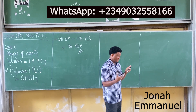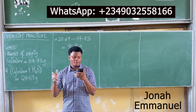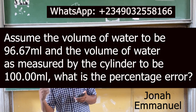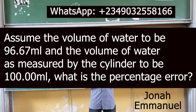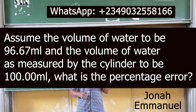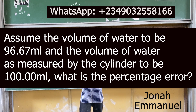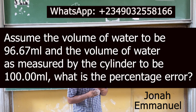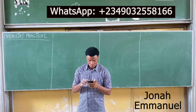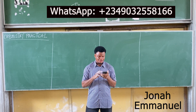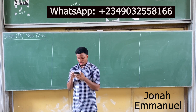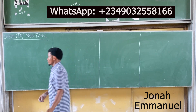Sample question 3. Assume the volume of water to be 96.67 ml and the volume of water as measured by the cylinder to be 100.00 ml. What is the percentage error? Let's find the solution. How do you find that?